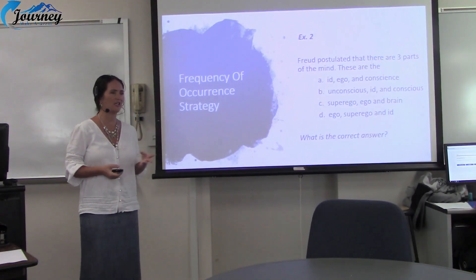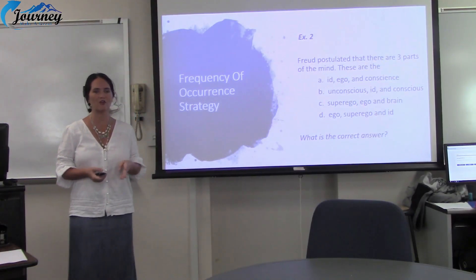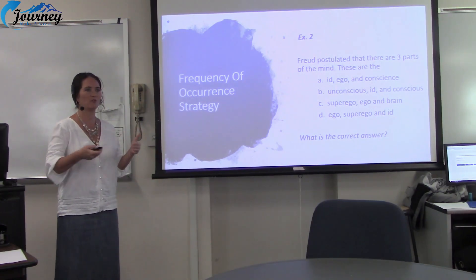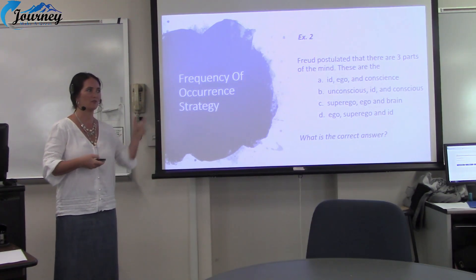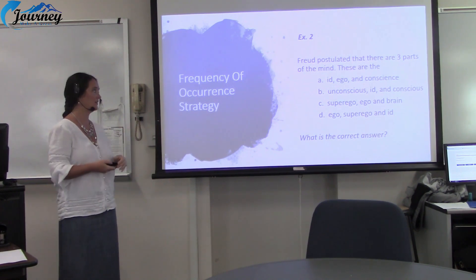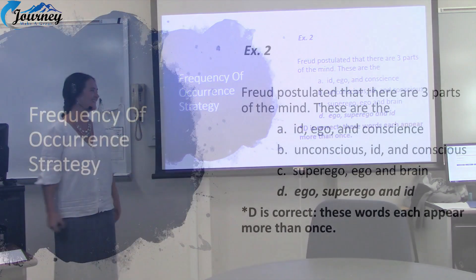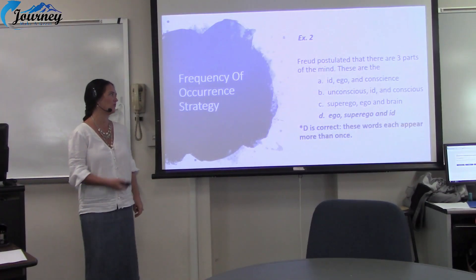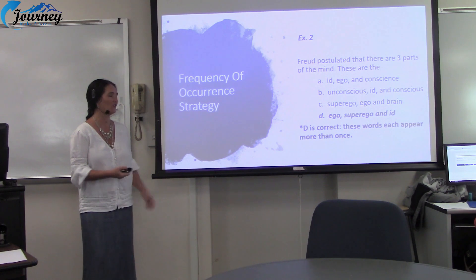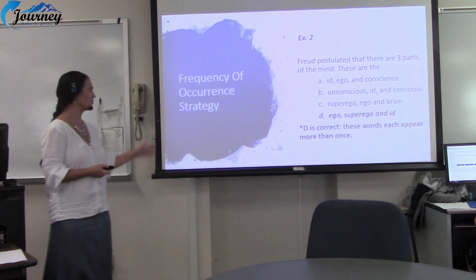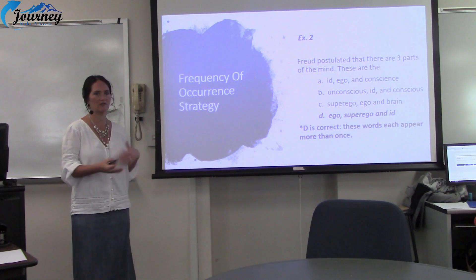Read this next question and the answer choices on your own. Are there any answer choices that have items mentioned more than once within them together? The answer is D, which is correct because those words each appear more than once across the choices, and they're all together in D. Do you see how this strategy can work for you?